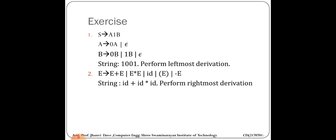Now, replacing B on the right doesn't mean it's rightmost derivation, because A is still on the left and B is still on the right as non-terminals. For leftmost derivation, we bring the terminal to the left side first — so replace A with ε, giving string 1001B. Then replace B with ε to get the output string 1001. So in leftmost derivation you replace the left non-terminal with ε first; in rightmost derivation you replace the right non-terminal with ε first.